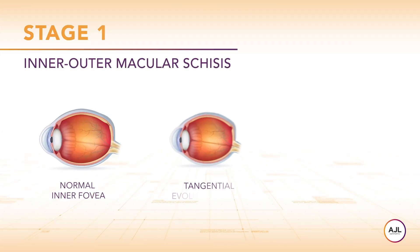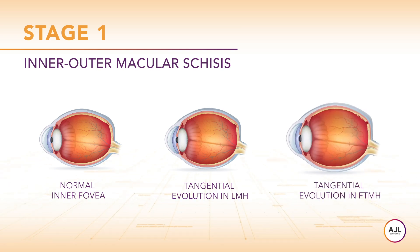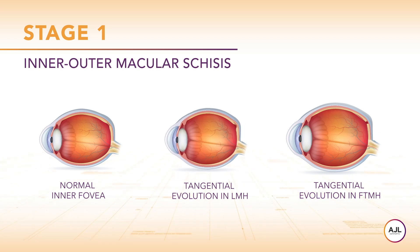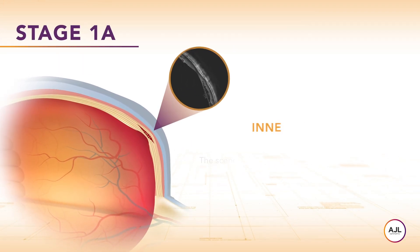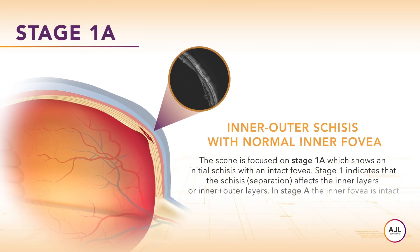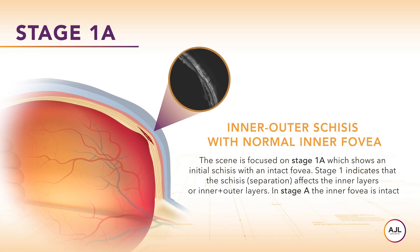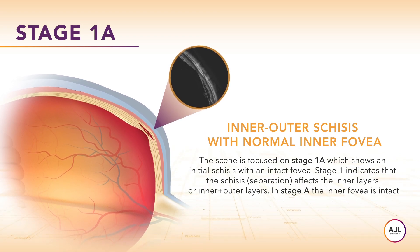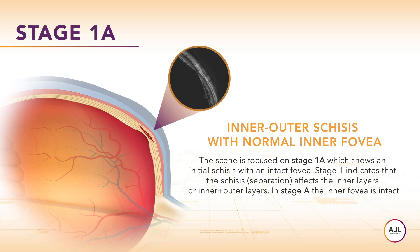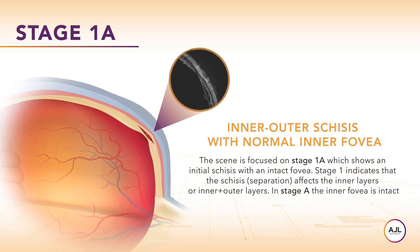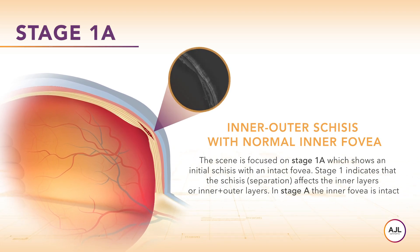The scene represents stage 1, initial schisis, and shows the tangential evolution from stage A (intact fovea) to B (lamellar macular hole) to C (full thickness macular hole). Stage 1a shows initial schisis with an intact fovea. Stage 1 indicates that the schisis affects the inner layers, or inner and outer layers. In stage A, the inner fovea is intact.